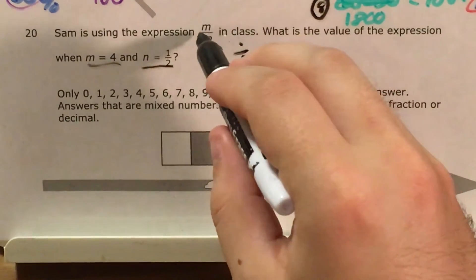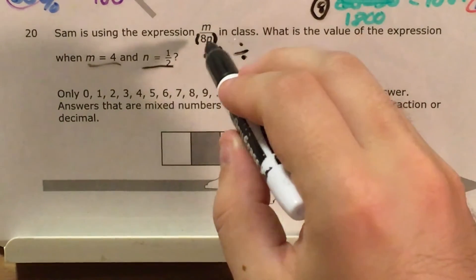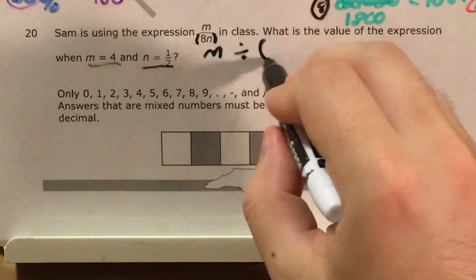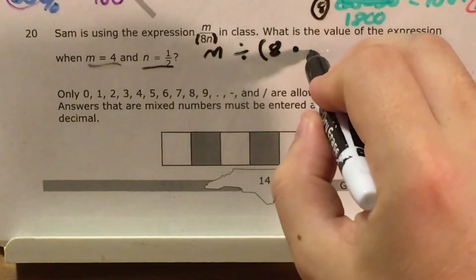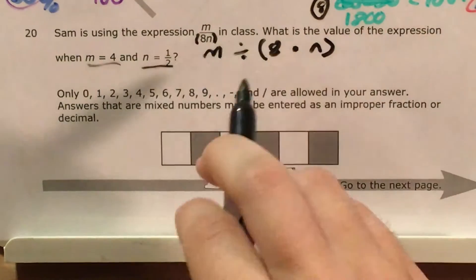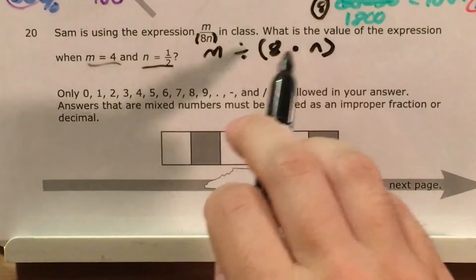and now instead of 8n, I'm going to put a set of parentheses around these, and I'm going to remind myself by writing this out that 8n is the same thing as 8 times n.